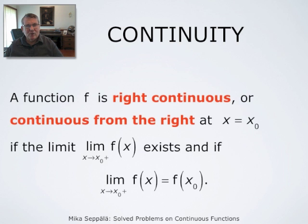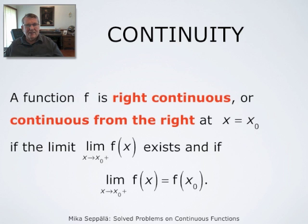Likewise, the function is right continuous at x₀ if it has a right-hand limit at x₀ — that is, if the numbers f(x) have a limit as x approaches x₀ through numbers larger than x₀ — and if this limit agrees with the value of the function at x₀.